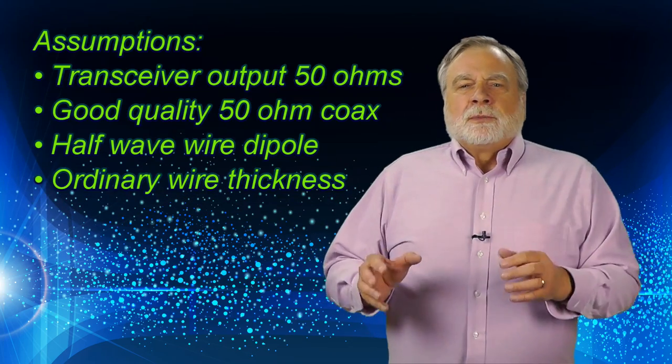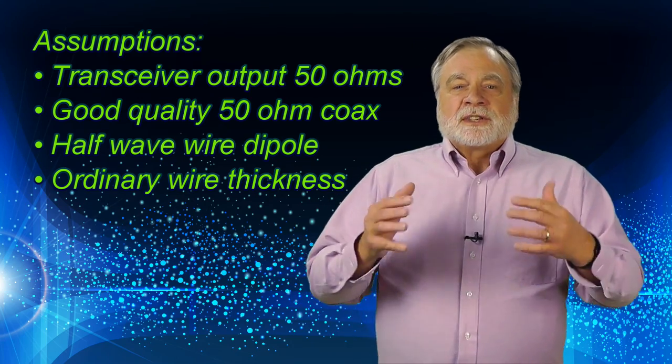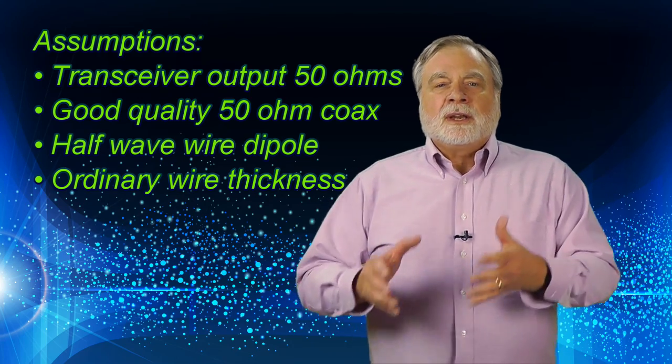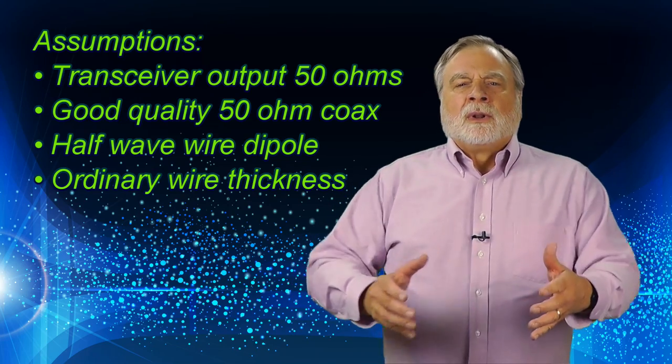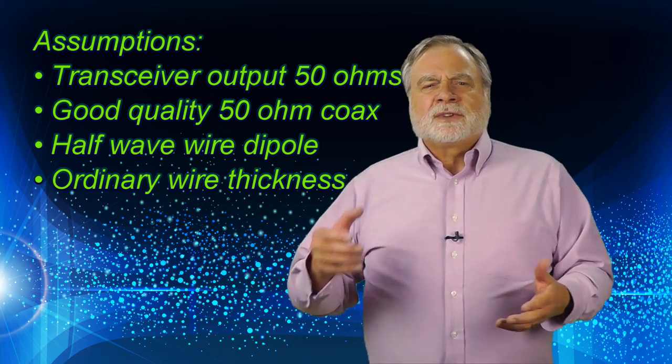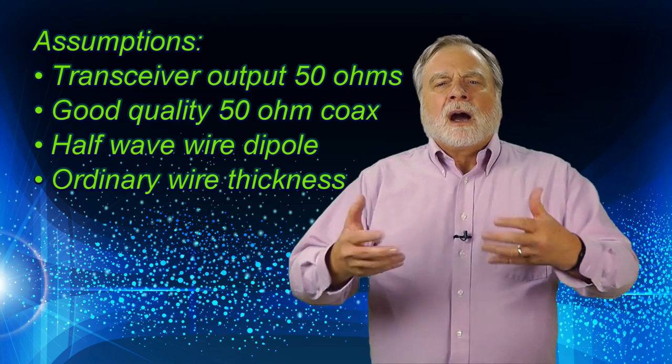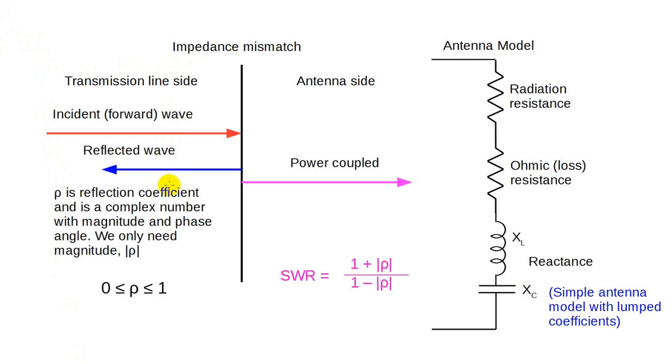SWR has to do with the transmission of electromagnetic energy, in other words, radio waves. I am assuming throughout that the transceiver has a 50-ohm output, and that your transmission line is good-quality 50-ohm line. I'm also using a half-wave dipole as the antenna with wire of ordinary thickness, such as 12 to 18 gauge, which is much like common household electrical wire. We will focus entirely on the connection between the transmission line and the antenna.